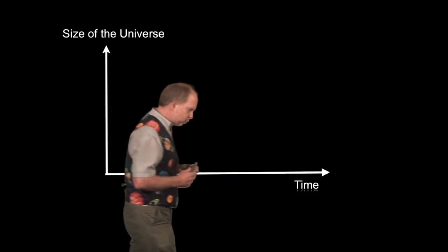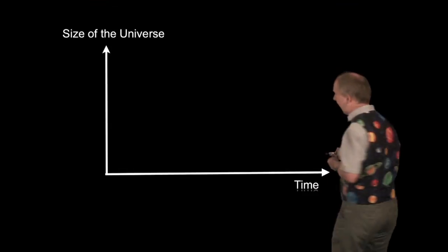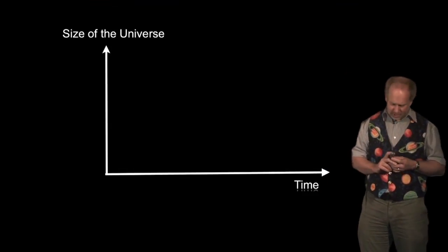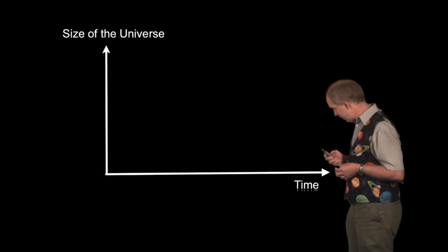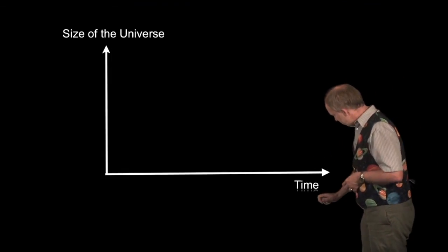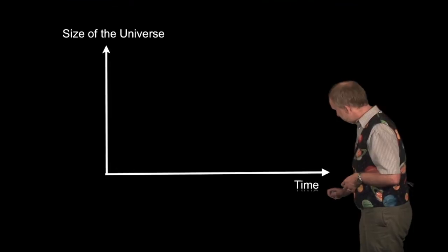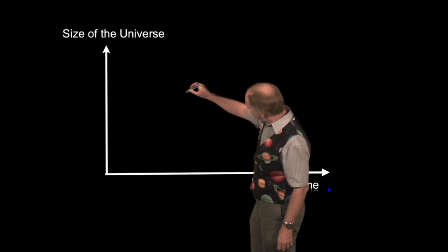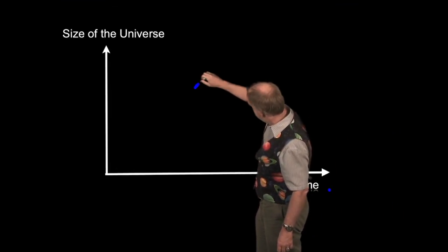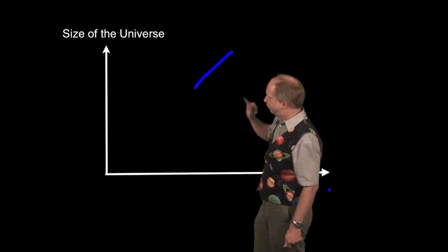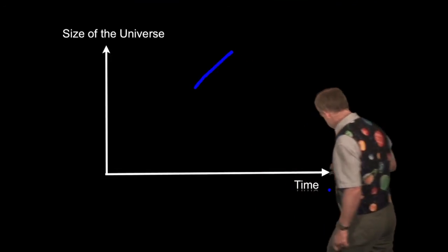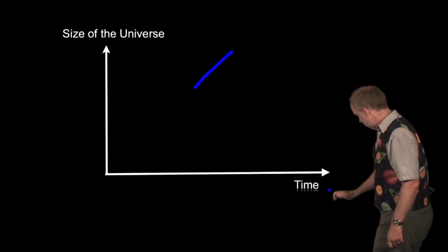The way we can measure it is we can look at how the size of the universe is changing. And measuring this is very hard. It got my colleague Brian Schmidt a Nobel Prize recently. But let's see what's going on here. What we know is that at the moment, the size of the universe is getting bigger. The universe was smaller in the past, bigger in the future. The question is, if we extrapolate that forward, what's going to happen?